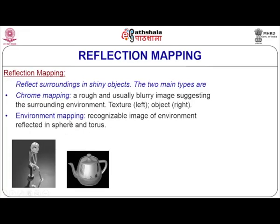Reflection mapping is another technique where you reflect the surrounding environment on the surfaces of objects. Often when someone wears spectacles, you can see the surrounding environment reflected on them — similarly, nearby objects appear on the surfaces of highly reflective metallic objects, like the metal teapot shown here where the surrounding environment is visible on the surface. This can be done using techniques like ray tracing.